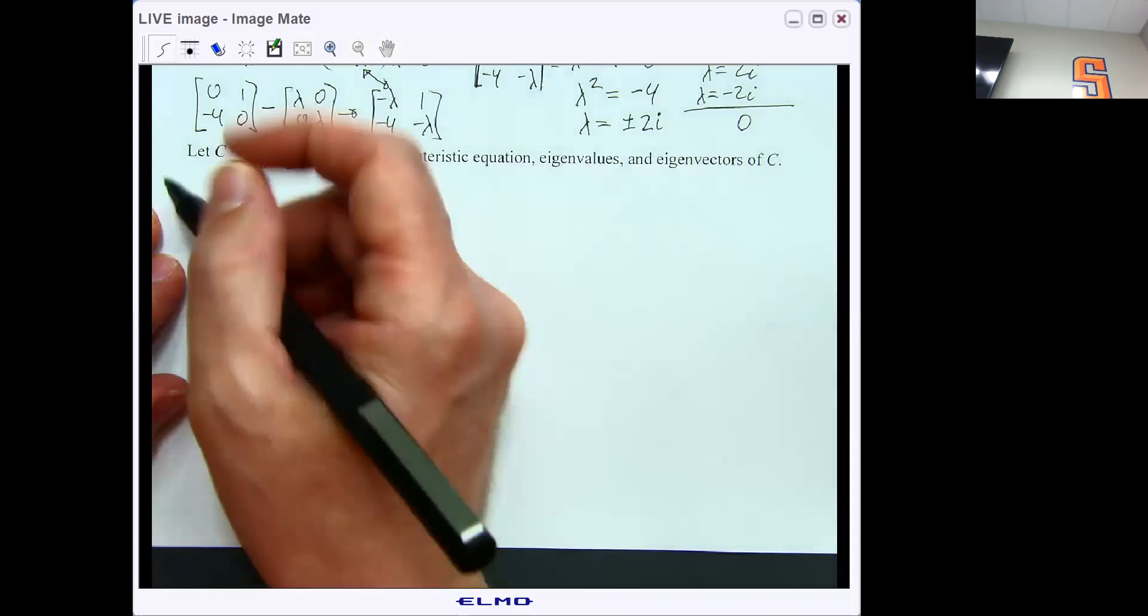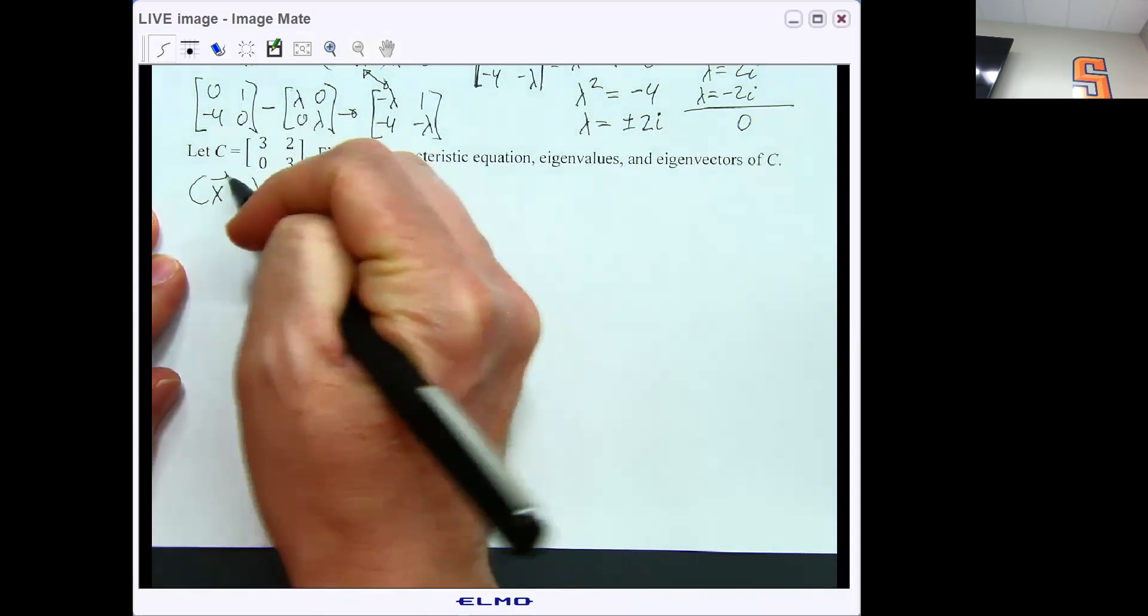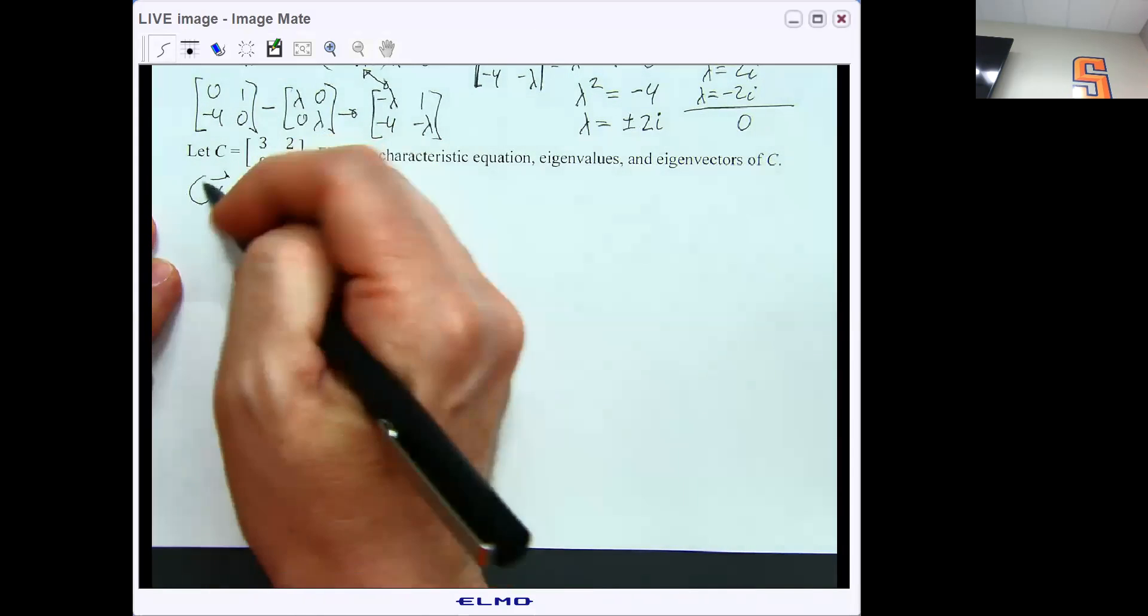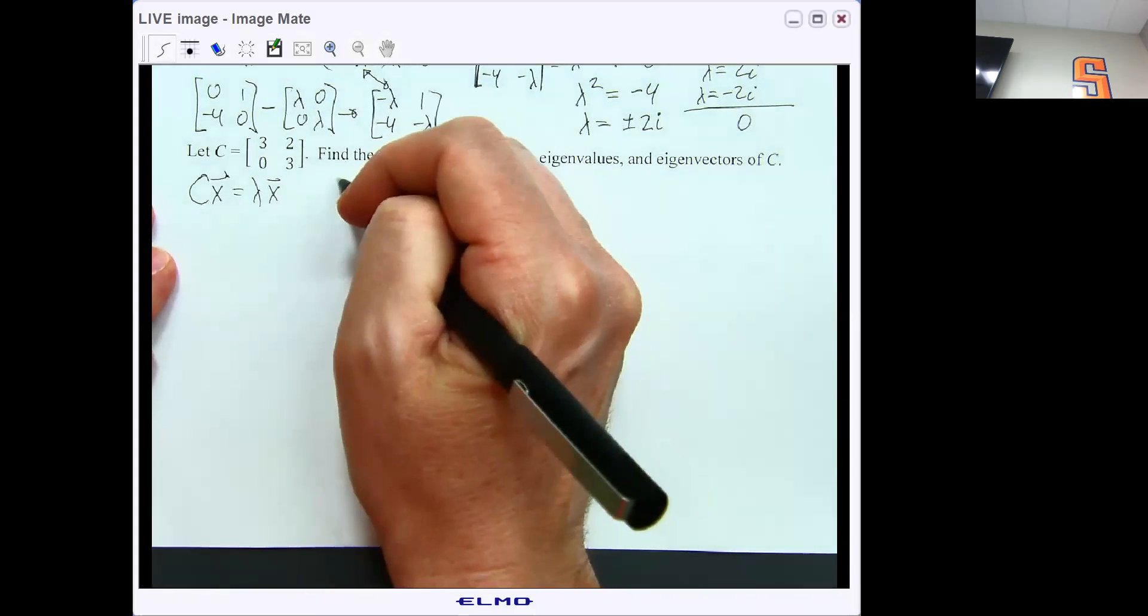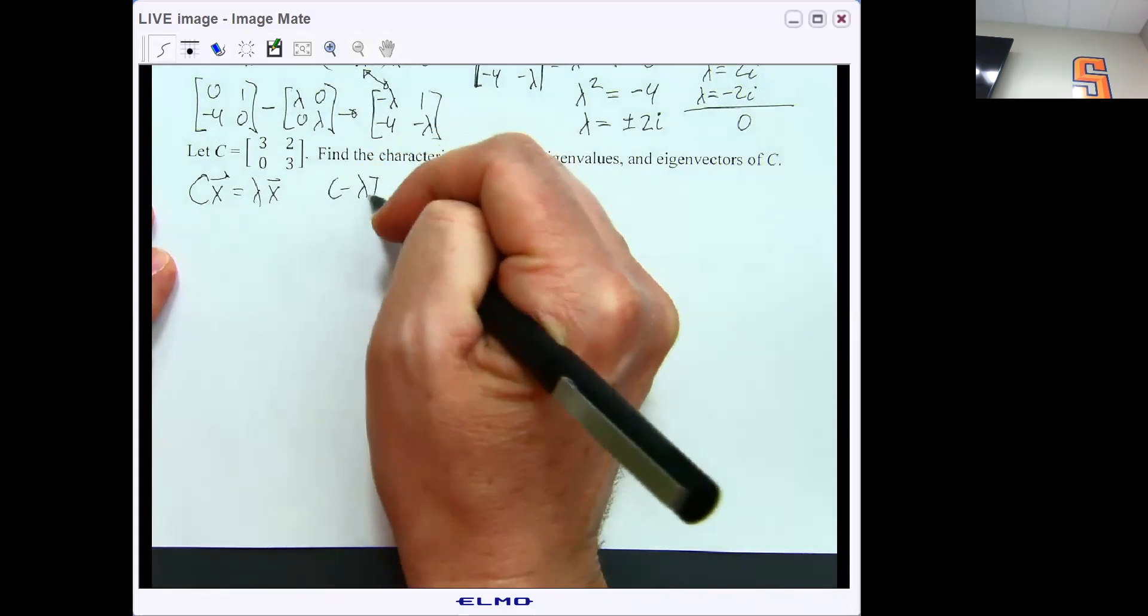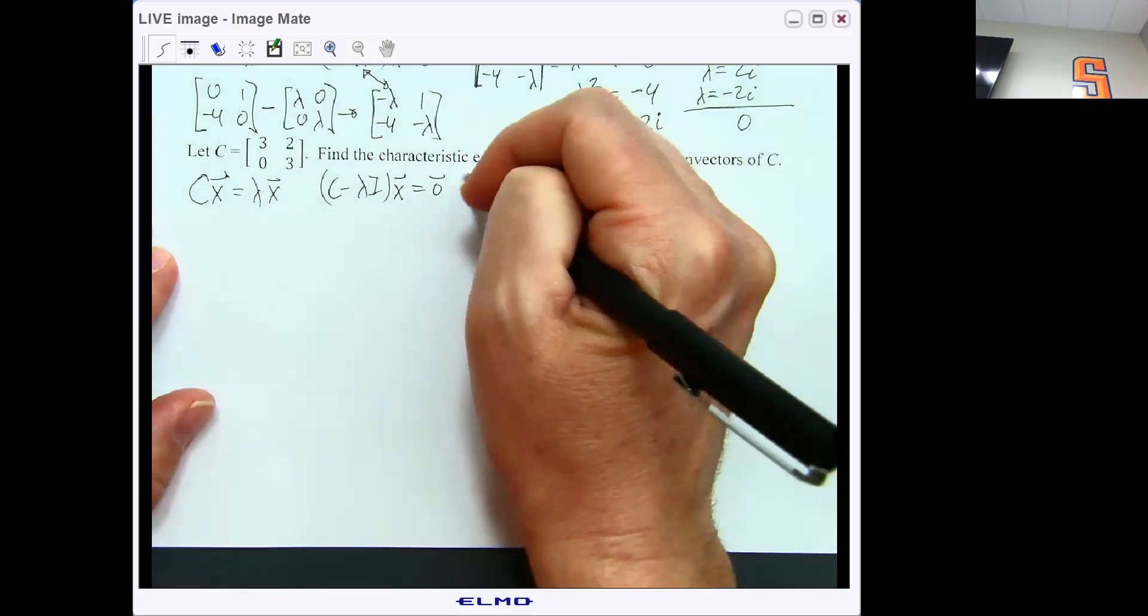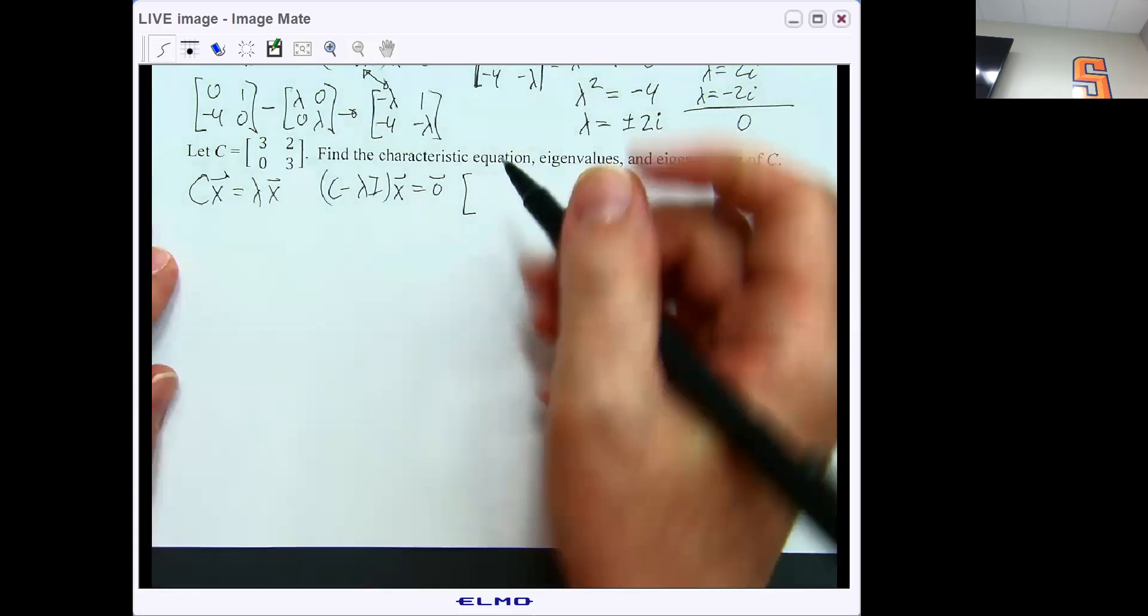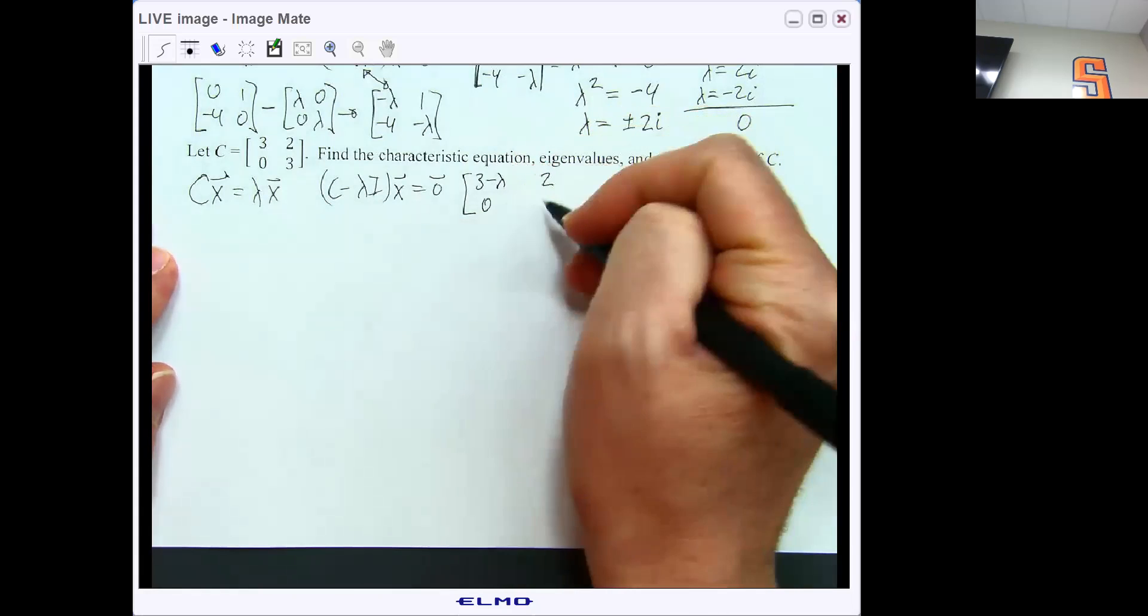So once again, for an eigenvalue eigenvector pair, the output is a scalar multiple of what we get if we do the matrix multiplication. So we'll get C minus lambda I times X equals 0, which if I do the C matrix minus lambda times the identity, we'll get [3 minus lambda, 2; 0, 3 minus lambda].